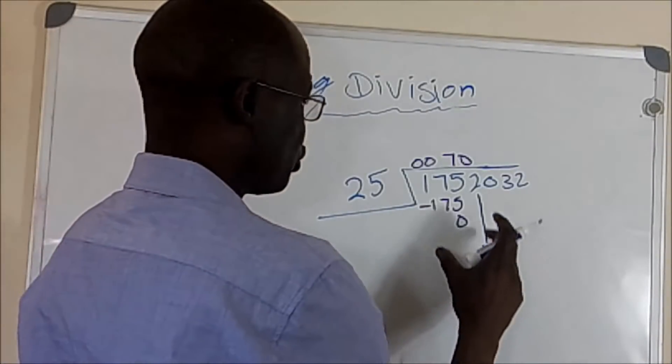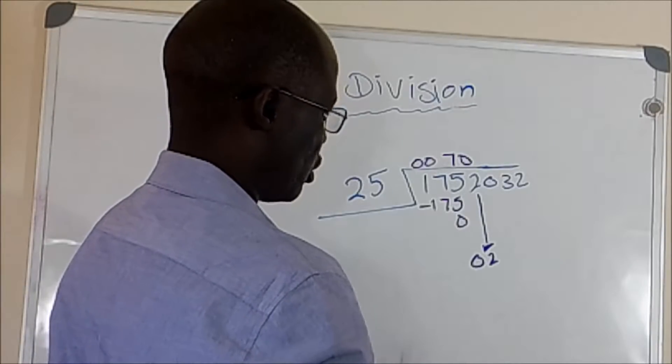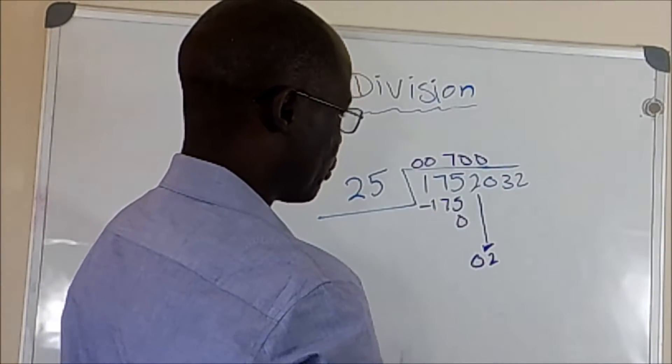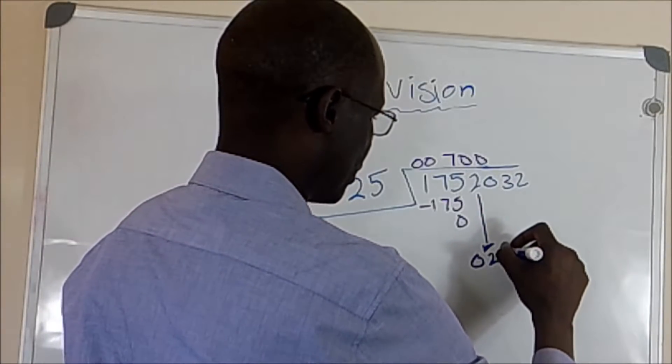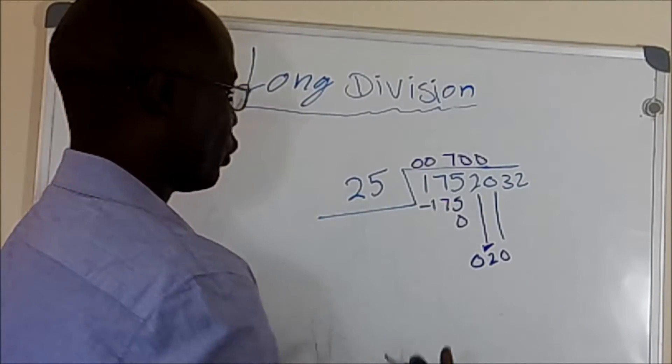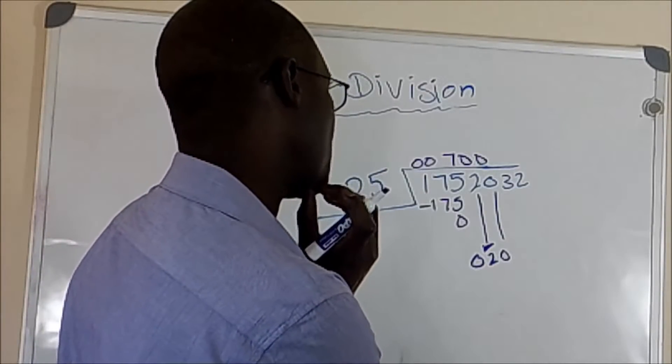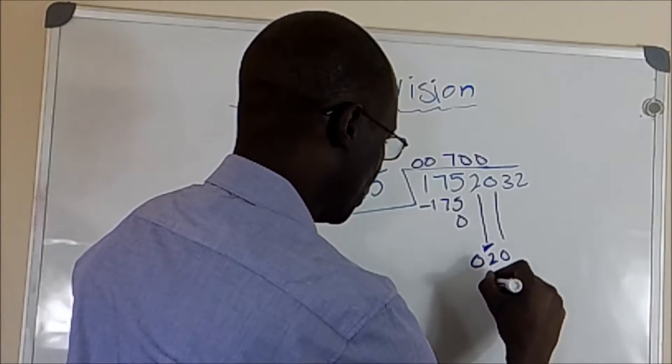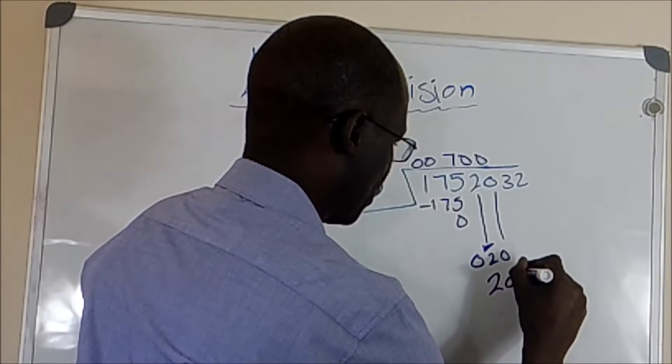So if you divide 2 by 25, you're going to get zero, because it's less. So you're going to bring zero down from here, and you got 20. 20 divided by 25, you cannot. So you bring 3 down, you get 203.